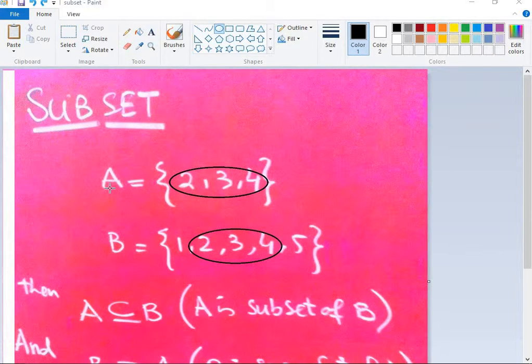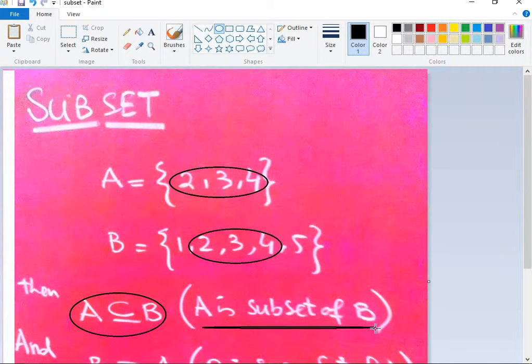Here, look at set A which has elements 2, 3, 4. And in set B, these 2, 3, 4 elements are there, so all elements of A are in B. So we will say A is a subset of B. This is how we say A is a subset of B.